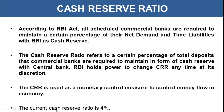The current cash reserve ratio rate is 4%. This means that if the net demand and time liabilities — the total deposits that a bank holds — is 100%, then 4% of that would be the cash reserve ratio that the bank would have to maintain with RBI.